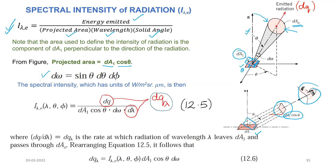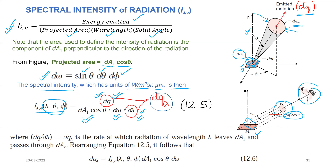Then we can calculate d_omega, the solid angle, which we discussed in the previous lecture. d_omega is given by sin(θ)dθdφ. The spectral intensity of radiation has units of watts per meter squared per steradian per micrometer, and is written as i_lambda(θ,φ), showing the dependence on lambda, theta, and phi. dq is the energy emitted, and this is the emitted radiation given by dq divided by the projected area dA1·cos(θ), the solid angle, and d_lambda.